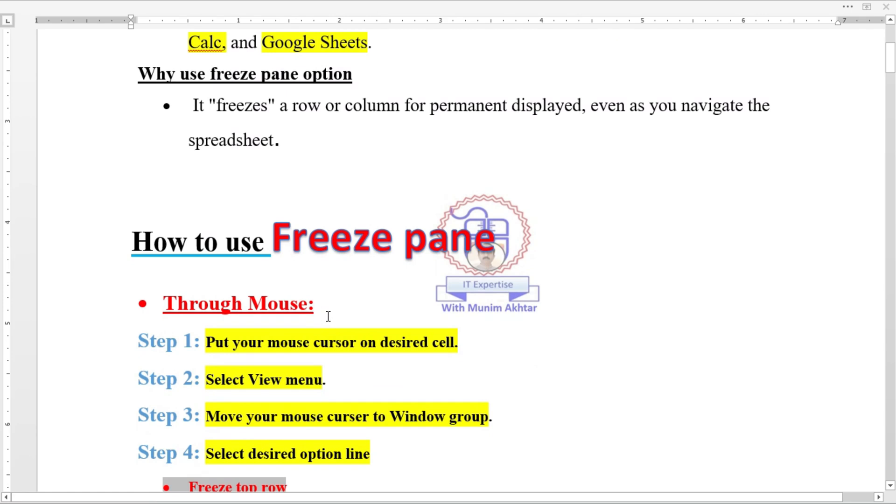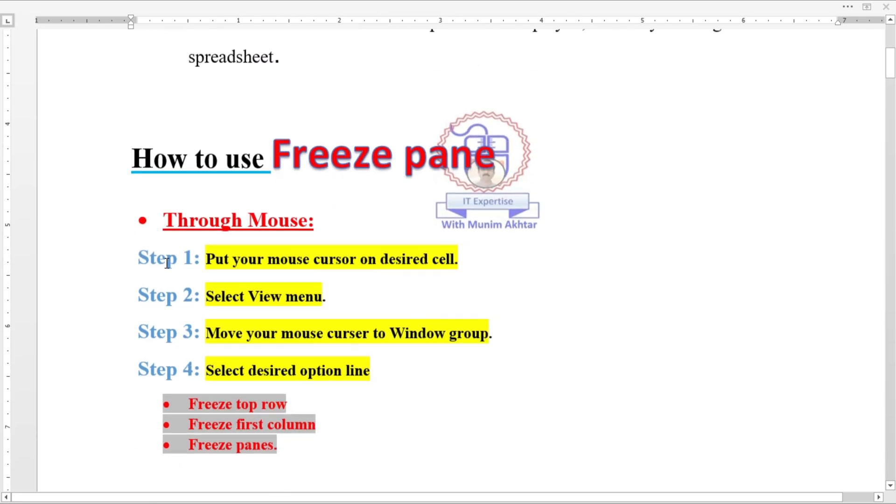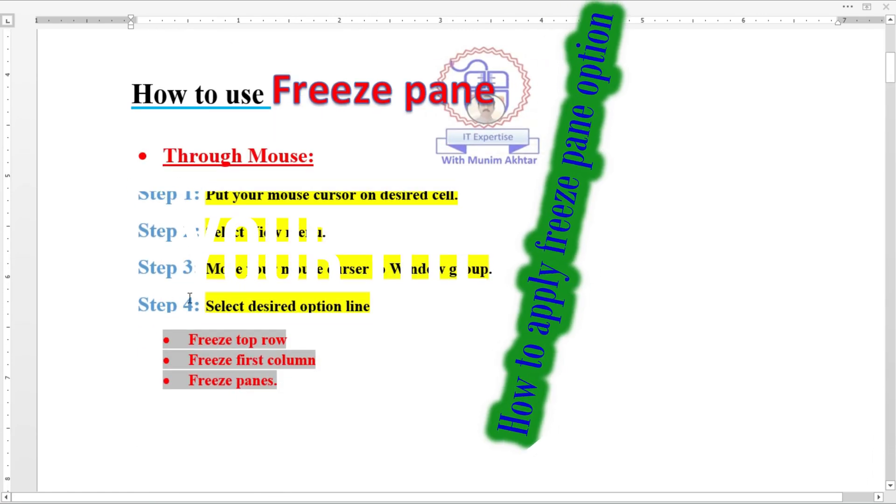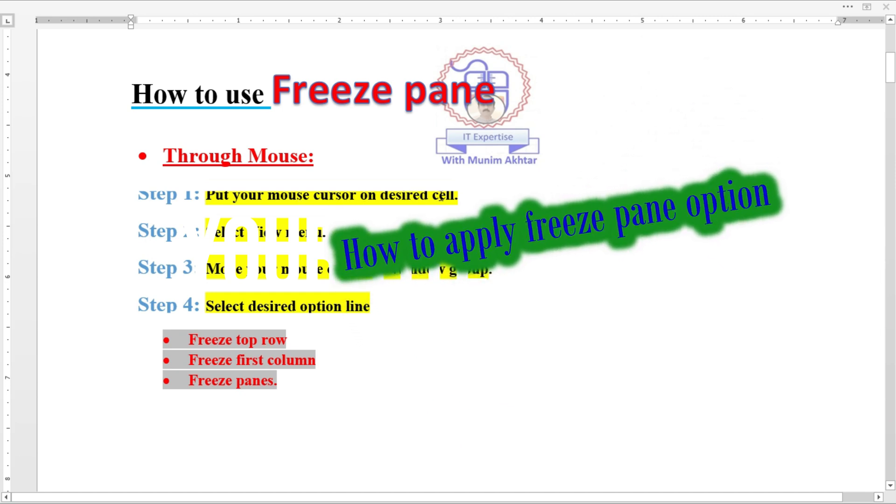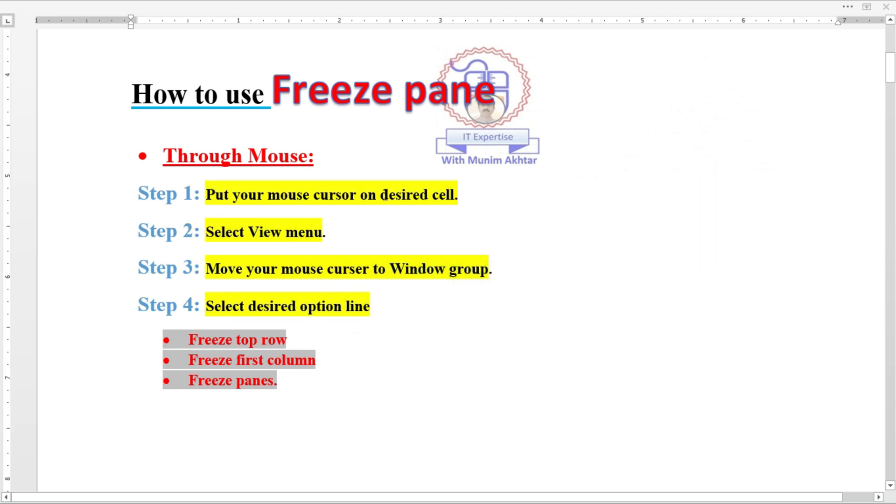How to use freeze pane through mouse? There are four steps. First, put your cursor on the desired cell where you have to apply freeze pane.